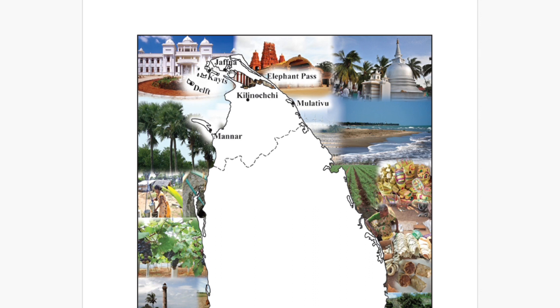In this region we can see areas like Jaffna, Elephant Pass, Kilinochi, Mullaitivu, Delf, and Kytes. We have learned about this northern part of our country.